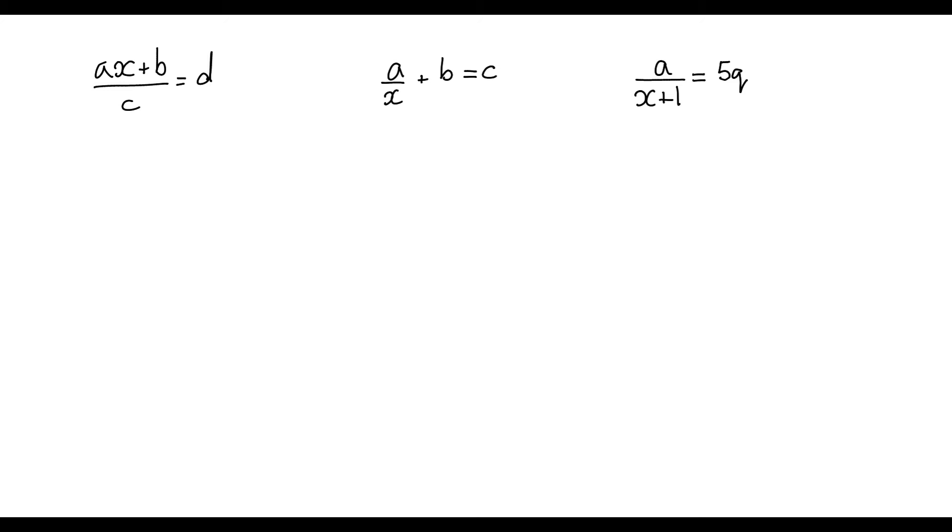So ideally if we want to get rid of the denominator we multiply by the denominator. If that denominator has not got any x in it, then multiplying by that value straight away is the best option.